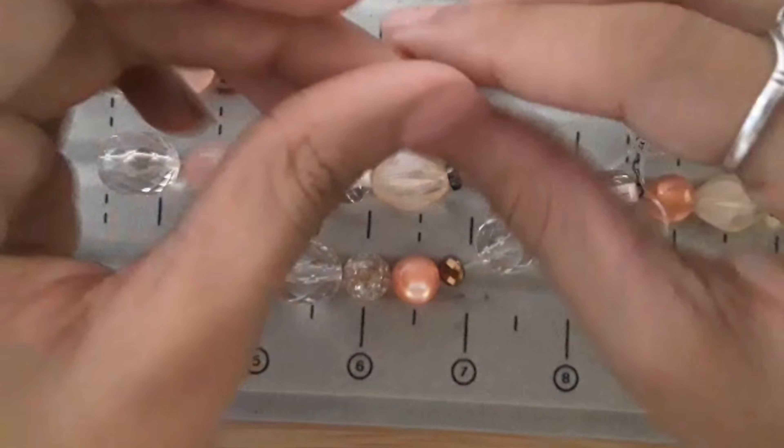So now you're going to take a little bit of your E6000 glue and we're just going to apply it on the knot like that, and just squeeze it together. And you're just going to do that to all of your knots. So now you're just going to let them dry.